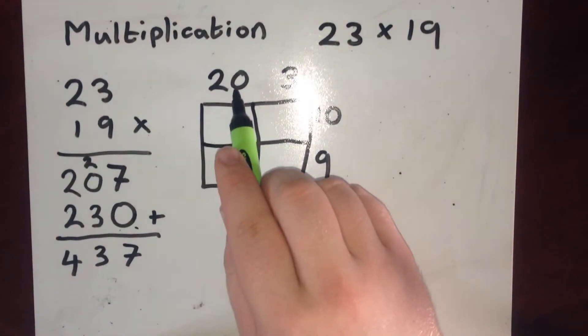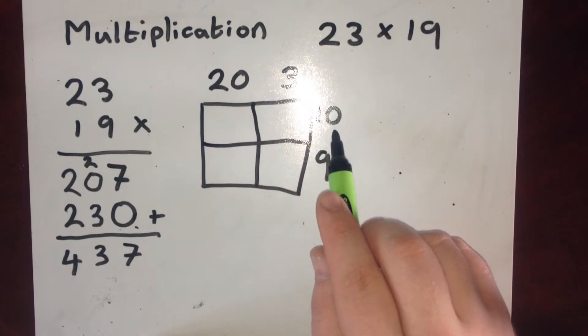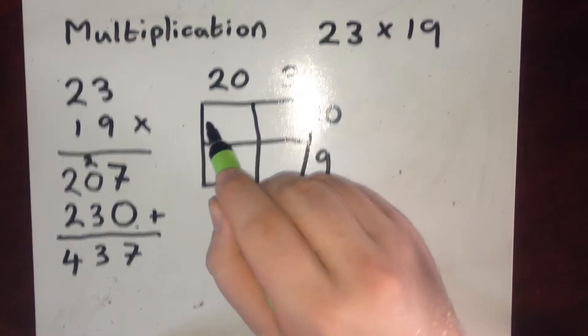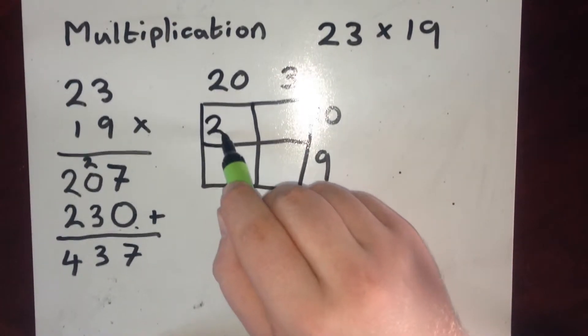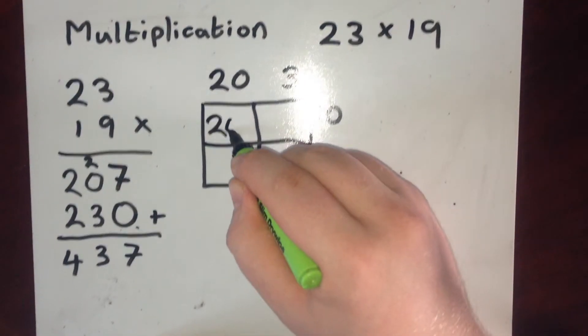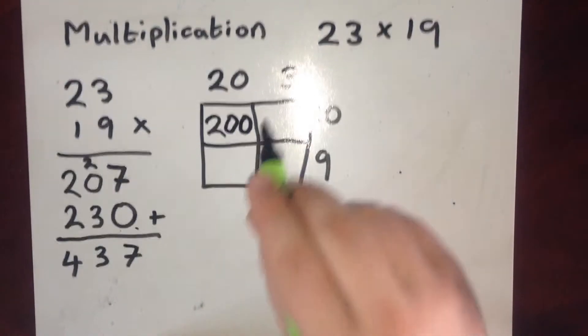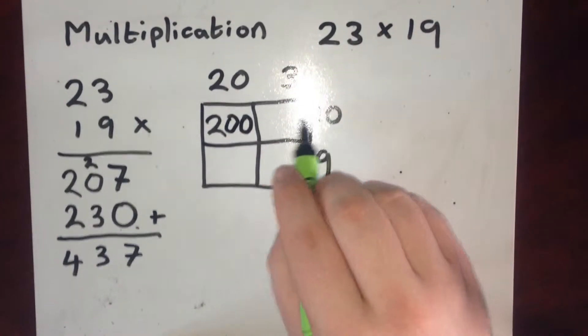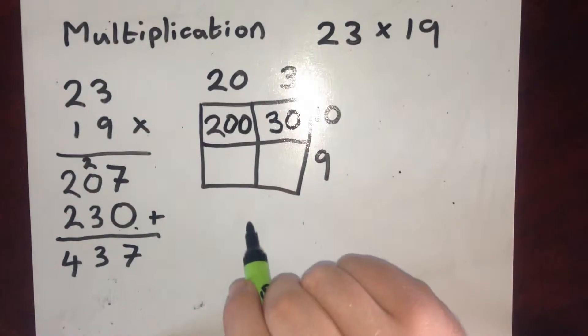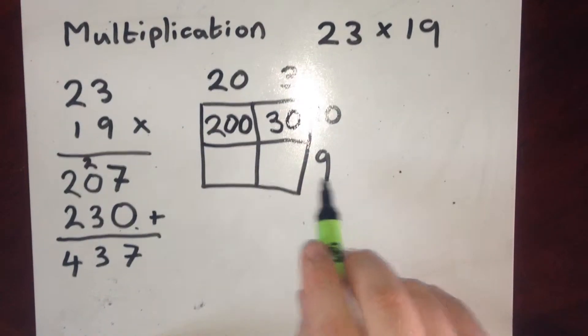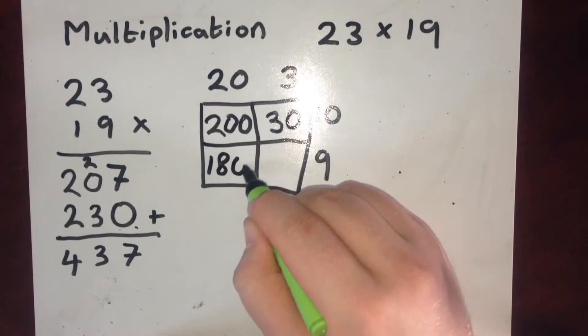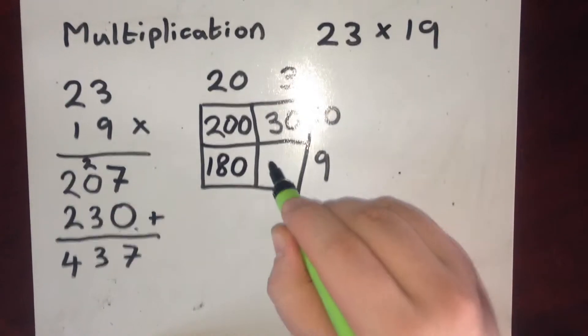So I give each of these numbers their own box. So then we work with these numbers. So 20 times by 10. The easy way to do these would be what's 2 times 1? So that's 2. And then count how many zeros we've got. So we've got 1 zero, 2 zeros. So the answer must have 2 zeros on the end. 3 times by 10. So 3 times 1 is 3, one zero. So that's 30. 20 times 9. Well 2 times 9 is 18, one zero. And 3 times by 9 is 27.